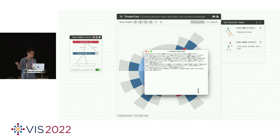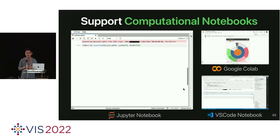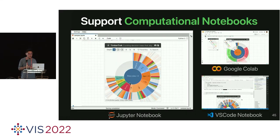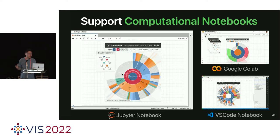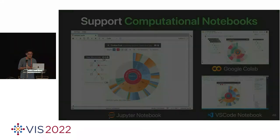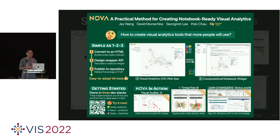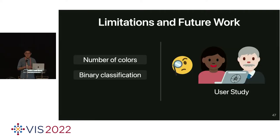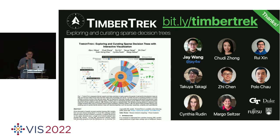Besides using TimberTrack in browsers, practitioners can use the tool in computational notebooks ranging from Jupyter Notebook, JupyterLab, Google Colab to VS Code Notebooks, using a technique called NOVA which converts any web-based VA tools into notebook-compatible VA tools. Some limitations of TimberTrack include the number of colors — if there are too many features, it may run out of colors. TimberTrack currently only supports classification. For future work, we want to use TimberTrack as a research instrument to see what data scientists or practitioners would use or what kind of tree they want. TimberTrack is open source and public — we encourage you to try it and give feedback.